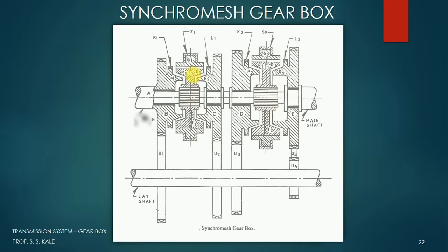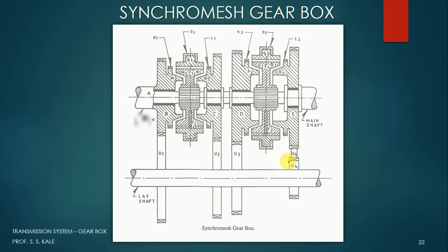In this particular case, the clutch shaft is not shown actually and this is our output shaft. You have to assume that here the clutch shaft is present, the clutch gear is present and from the clutch gear the power is transmitted to the lay shaft. The gears U1, U2, U3, U4 are four gears which are mounted firmly on the lay shaft — there is no relative motion allowed between U1, U2, U3, U4 and the shaft. Once a gear rotates, the shaft will also rotate, and vice versa.